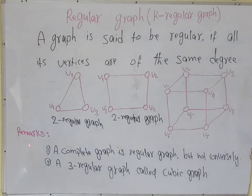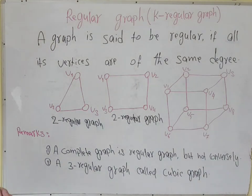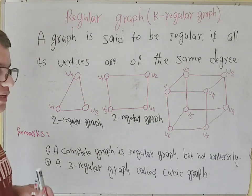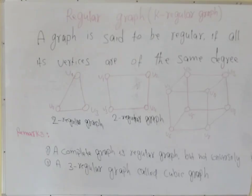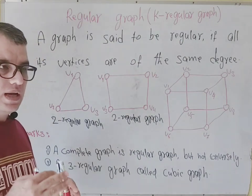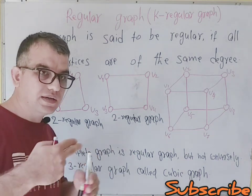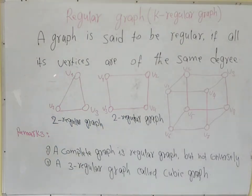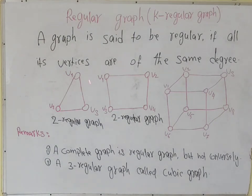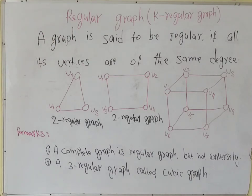Here are our remarks. A complete graph is a regular graph, but not conversely. According to the definition of a complete graph, a complete graph is a graph where every vertex is incident to every other vertex. So it can be called a complete graph, and it is also a regular graph. But a regular graph is not always a complete graph.